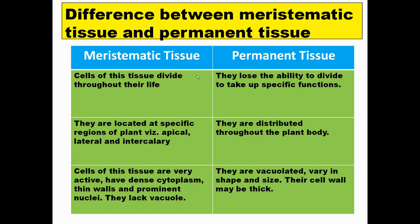Now let's discuss the difference between meristematic tissue and permanent tissue. Meristematic tissue divides repeatedly throughout its life, forming newer and newer cells. Permanent tissue loses its ability to divide and performs specialized functions. Meristematic tissues are located at specialized locations — apical, lateral, and intercalary — while permanent tissue is distributed throughout the plant body: stem, leaves, and roots. Meristematic cells are very active, having thin cytoplasm, thin wall, a prominent nucleus, and almost no vacuole. Permanent tissue has a full-fledged vacuole and varies in shape and size; cell walls may be thick or thin.